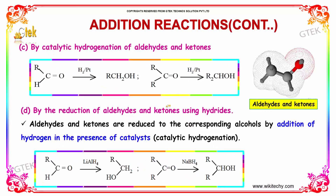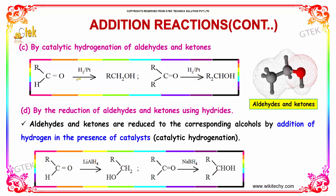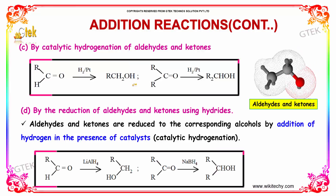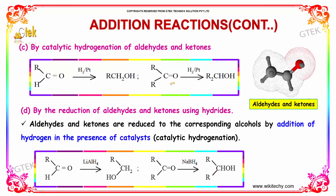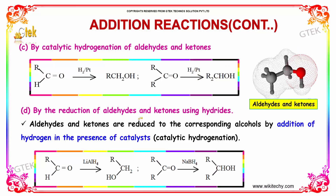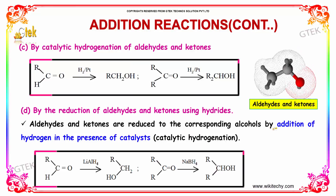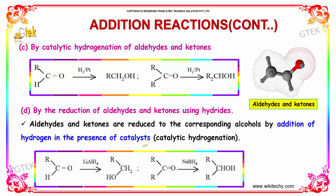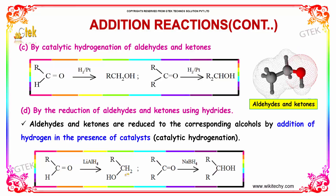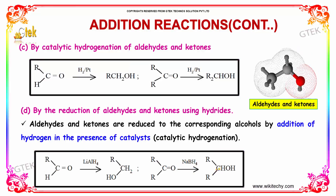The third method is catalytic hydrogenation of aldehydes and ketones. The aldehyde is reacted in the presence of hydrogen with a platinum catalyst to form RCH2OH, which is a primary alcohol. Similarly, a ketone in the presence of H2 and platinum catalyst results in the formation of RCHOH by reduction. Aldehydes and ketones are reduced to the corresponding alcohols by addition of hydrogen in the presence of a catalyst. LiAlH4 and NaBH4 are also reducing agents for the production of alcohol.